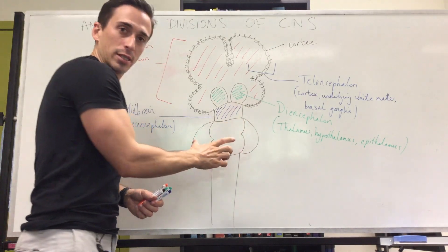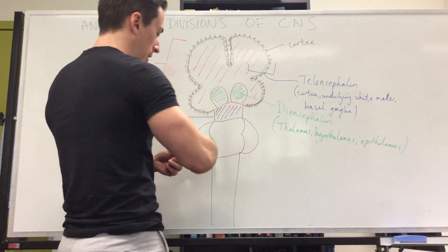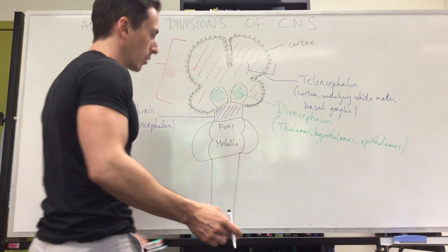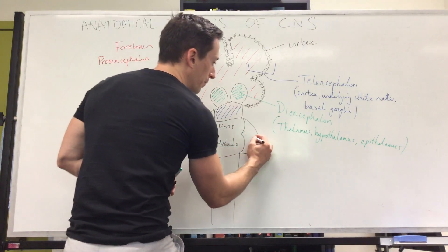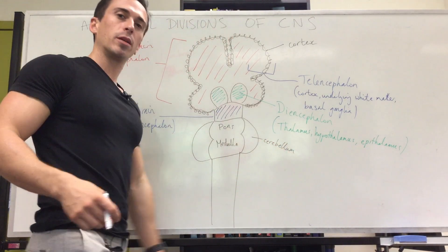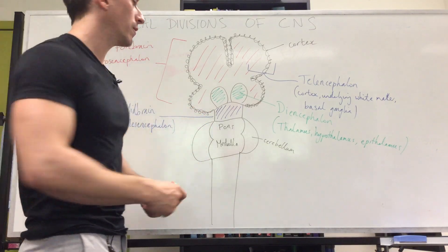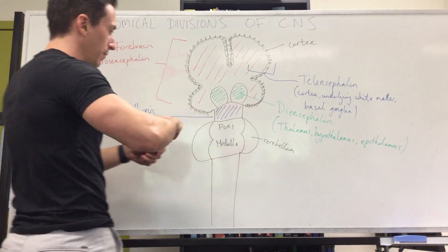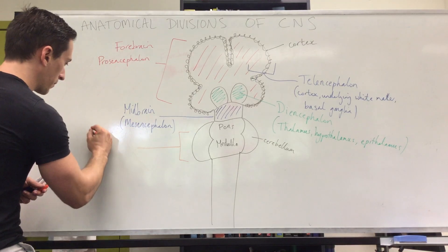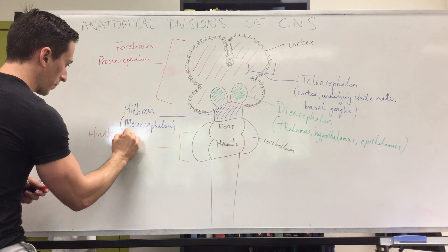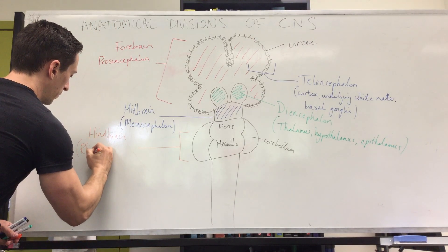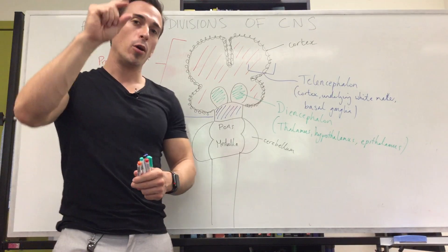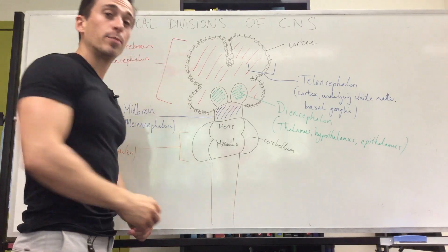Then we go to the next substructures: you've got the midbrain, then the pons and the medulla — also known as the medulla oblongata. The structure that sits behind is the cerebellum, which simply means 'little brain.' Together, this entire area forms the hindbrain, also known as the rhombencephalon, which is made up of the pons, medulla, and cerebellum. Below that is the spinal cord.